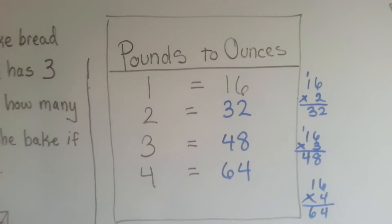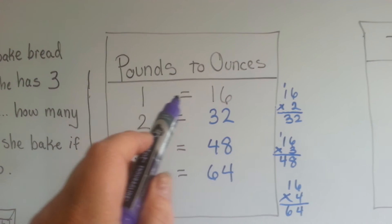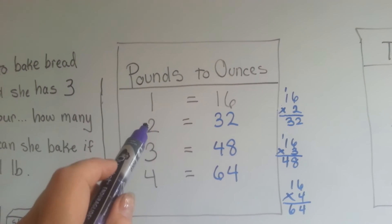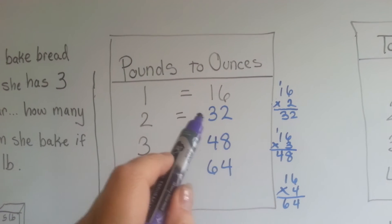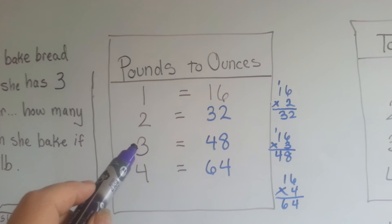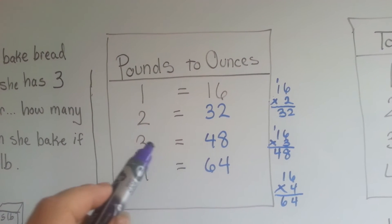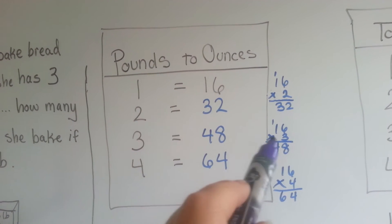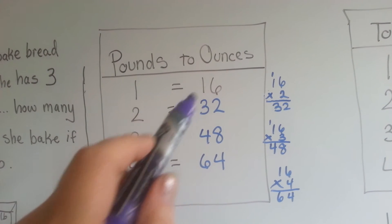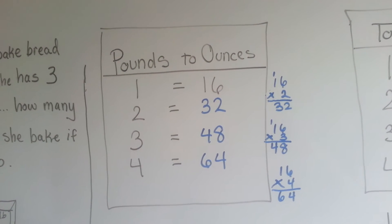If we wanted to convert pounds to ounces, one pound is sixteen ounces. So, to figure out two pounds, we multiply sixteen times two, which is thirty-two. To figure out three pounds to ounces, knowing that each one is sixteen, we do three times sixteen, which is forty-eight. Four pounds, four times sixteen is sixty-four.